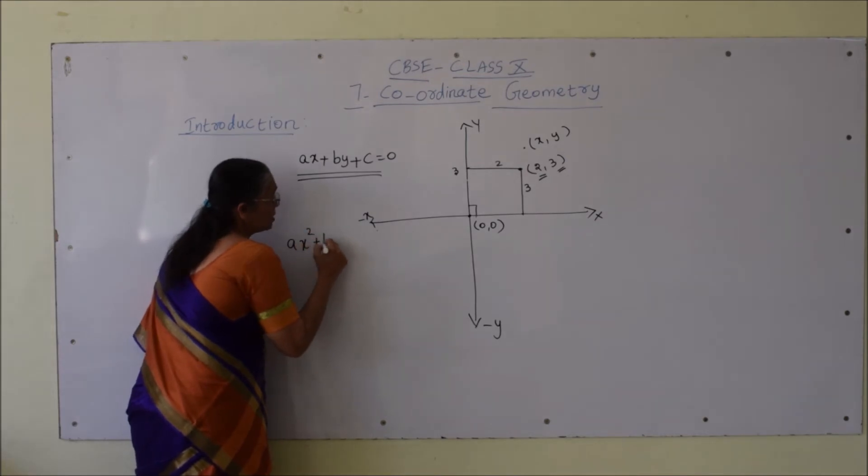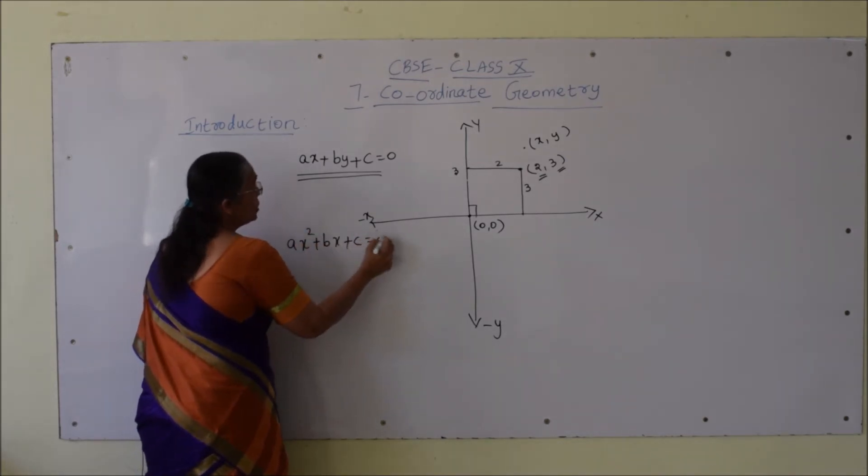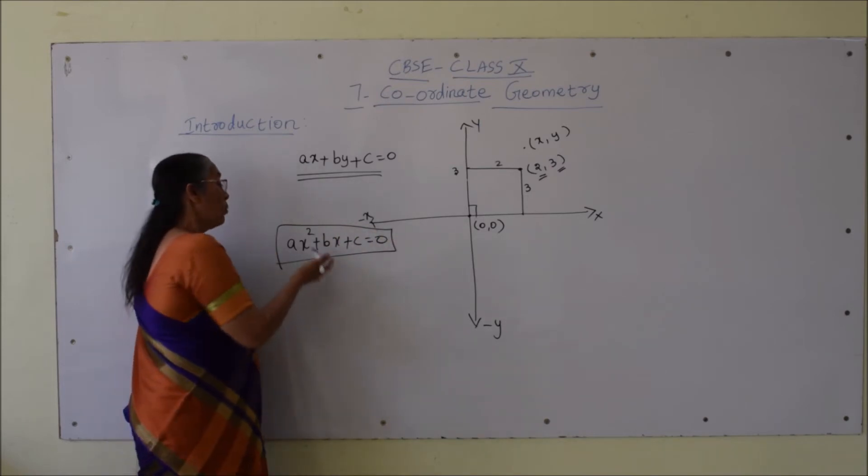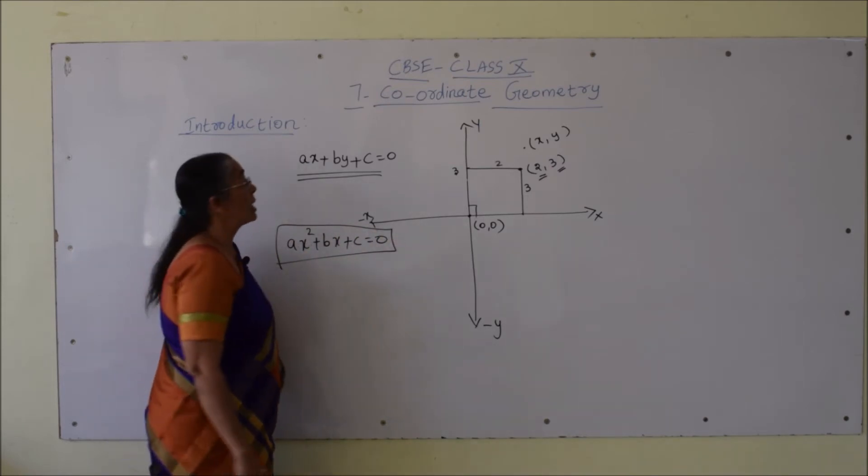ax² + bx + c = 0, a second degree equation in one variable, represents a curve.